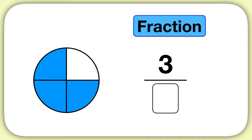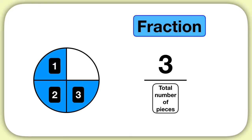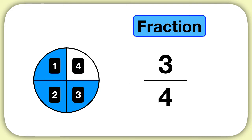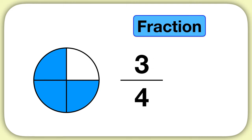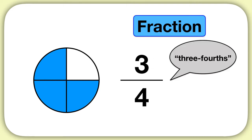Then the number on the bottom is the total number of pieces in the circle. We can count that there's 1, 2, 3, 4 pieces in a full circle, so we'll write the number 4 below the line. Now we have our fraction 3 fourths.